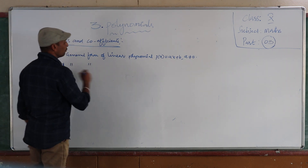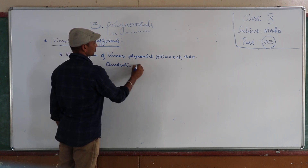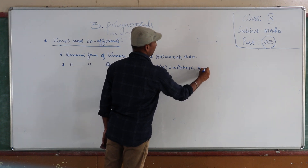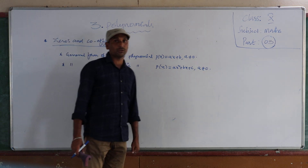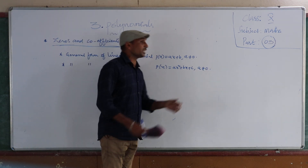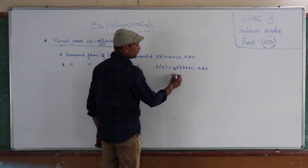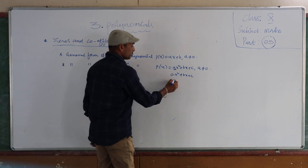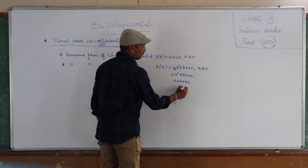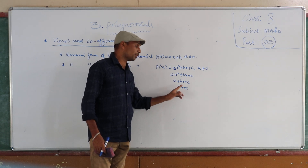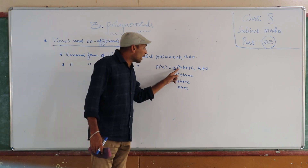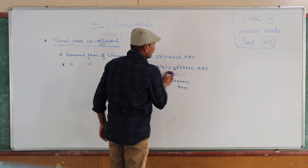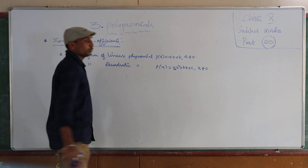Then the general form of a quadratic polynomial: p(x) = ax² + bx + c, where a ≠ 0. We take the condition a ≠ 0 because if a equals 0, substituting 0 into x² gives 0, leaving bx + c, whose highest power of the variable is 1 — making it a linear polynomial instead.